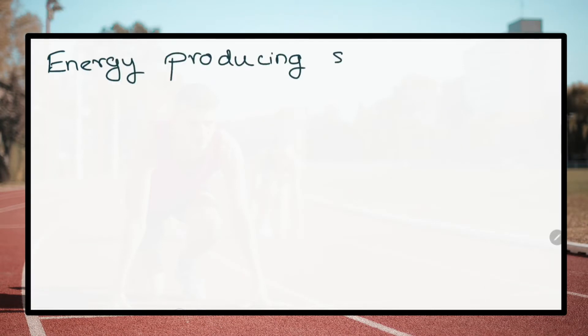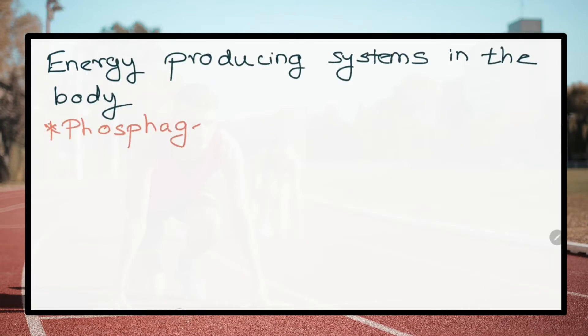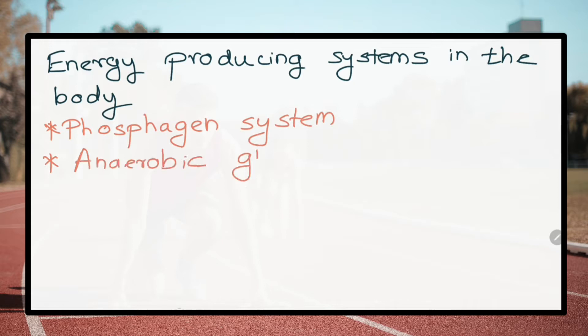What are the energy producing systems in the body? The phosphogen system, anaerobic glycolysis, and aerobic glycolysis.